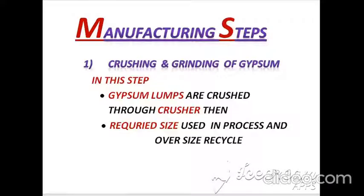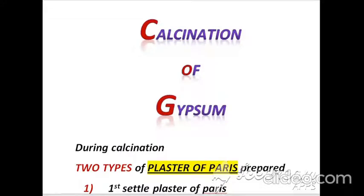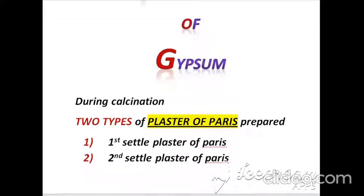In the manufacturing steps, the first step is crushing and grinding of gypsum. In this step, gypsum lumps are crushed through crushers. The required size is used in the process, and oversize material is recycled. After crushing and grinding, calcination of gypsum starts.